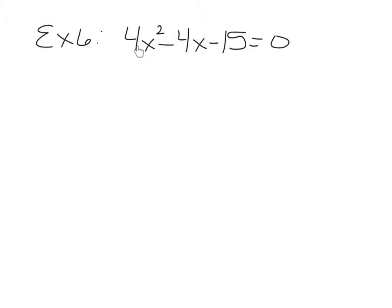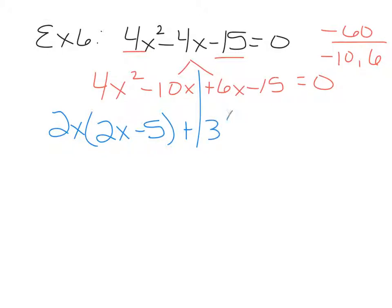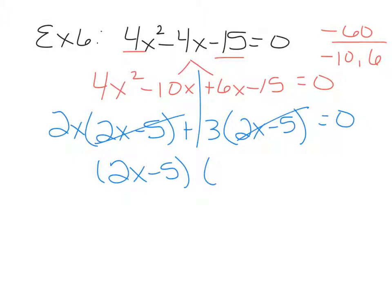Example 6 is at the top of page 219: 4x squared minus 4x minus 15 equals 0. Because of the leading coefficient 4, we'll use the AC method. 4 times negative 15 makes negative 60. Looking for two numbers that multiply to make negative 60 but add to make negative 4 — one positive and one negative — that's negative 10 and positive 6. Replace the middle term with negative 10x plus 6x, bring down the negative 15 and the 4x squared. Factor by grouping: the GCF in the front is 2x, giving 2x times 2x minus 5. The GCF in the back is 3, giving 3 times 2x minus 5.